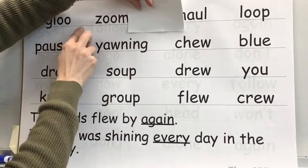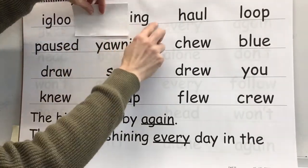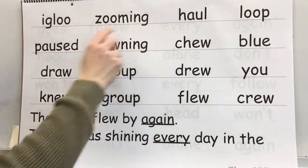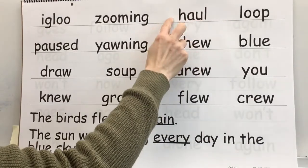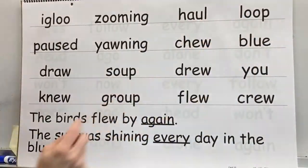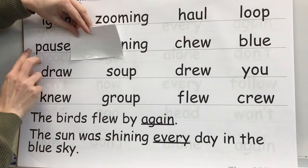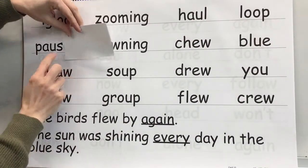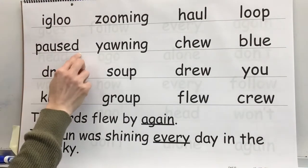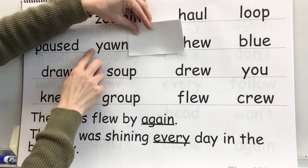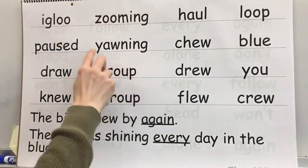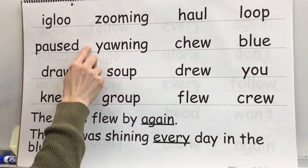Sound: oo. Base word: zoom. Ending: ing. Blend: zooming. Word: zooming. Sound: ah. Word: hall. Sound: oo. Word: loop. Sound: ah. Base word: pause. Ending: d. Whole word: paused. Sound: ah. Base word: yawn. Ending: ing. Blend: yawning. Word: yawning.